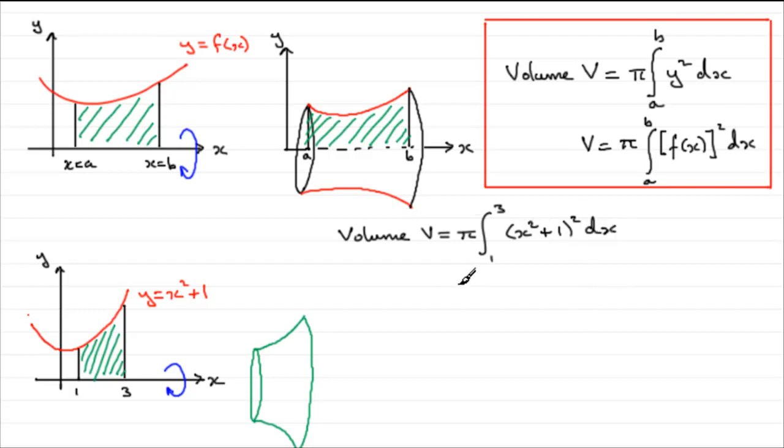And if we do that, we're going to have pi times the integral going from 1 to 3 of x to the power 4 plus 2x squared plus 1. And that would be integrated with respect to x.